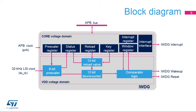The Independent Watchdog registers are located in the core voltage domain, while its functions are in the VDD voltage domain. In this way, the Independent Watchdog continues counting down even if the core voltage is switched off. Two clocks are needed: the APB clock is required to access registers, and the LSI clock is required for the functional part of the watchdog. This architecture allows the Independent Watchdog to work even in stop and standby modes.